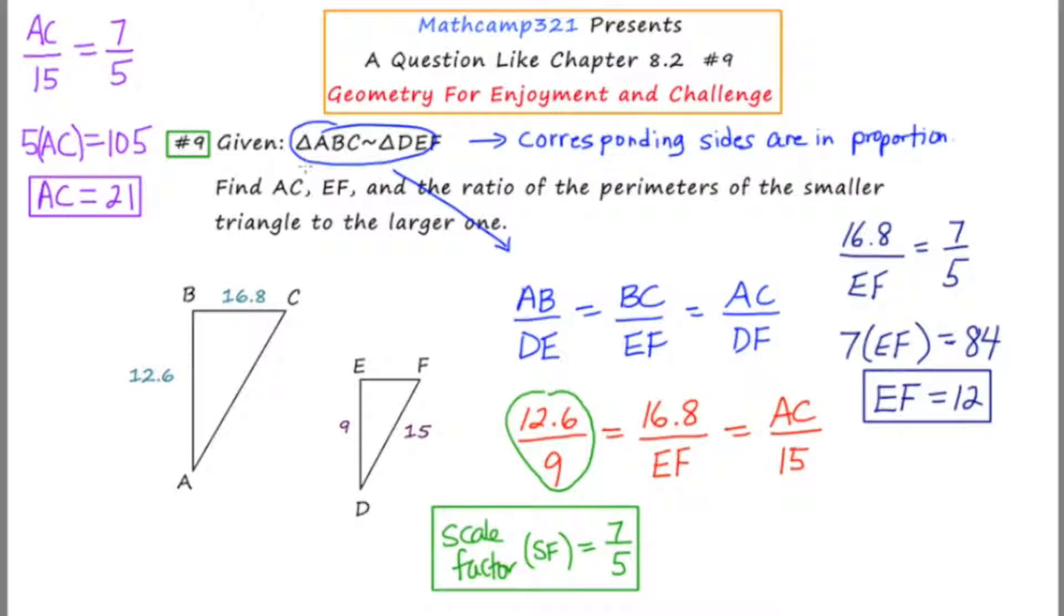So just doing a quick inventory. They asked us to find AC, I found that. They asked us to find EF, I found that. And they wanted us to find the ratio of the perimeter of the smaller triangle to the larger triangle. And one of the properties of similar figures is that the ratio of the perimeters is the same as the scale factor.